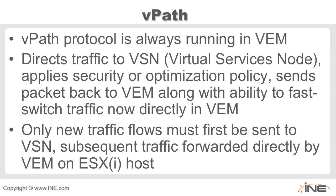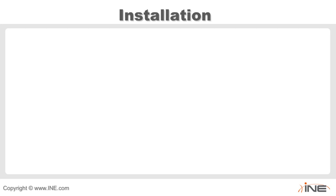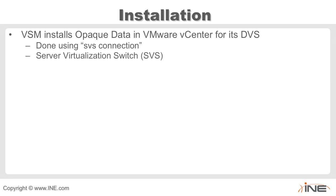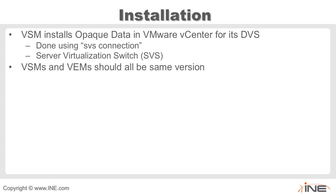Only new traffic flows have to be first sent to the VSN or VSB; subsequent flows are forwarded directly on the ESXi host itself. During installation for the Nexus 1000V, the virtual supervisor module will install something called opaque data in the VMware vCenter for its distributed virtual switch. This is done using something called an SVS connection, or server virtualization switch. VSMs and VEMs should all be the same version — the only time they'd be out of version is during an upgrade, and there's a specific upgrade path on Cisco.com.